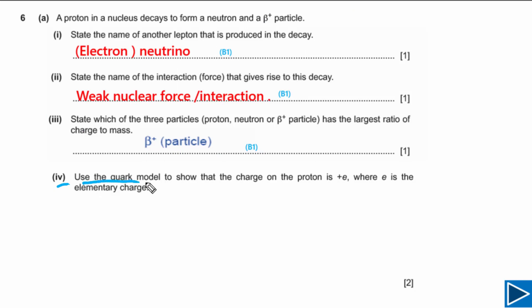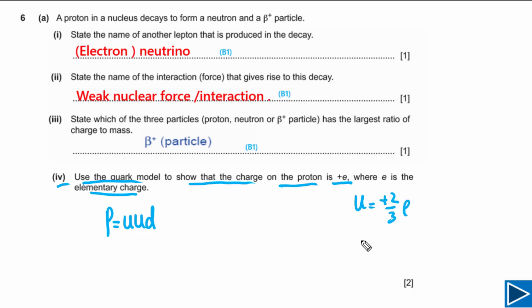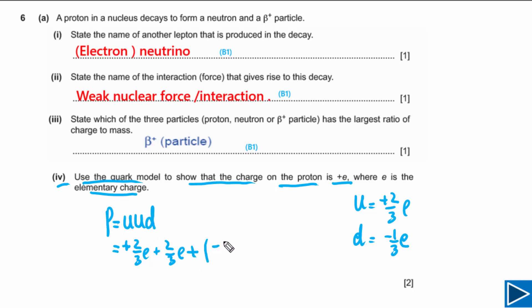For the next part, we need to use the quark model to show that the charge on the proton is plus E, where E is the elementary charge. The proton consists of two up quarks and one down quark. The charge on one up quark is plus two-thirds E, and the charge on one down quark is minus one-third E. Simply adding these charges: 2 × (2/3 E) + (−1/3 E).